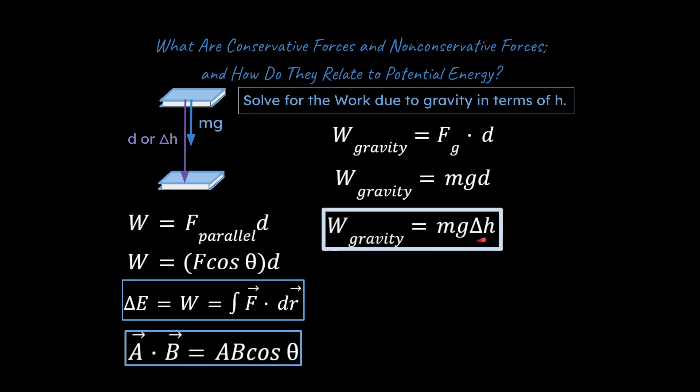this force due to gravity becomes mg times the distance through which that force is applied. And we can say, well, let's just sub in a delta h for that. And if we did that, we would say the work due to gravity is equal to mg delta h. Hopefully that looks familiar.